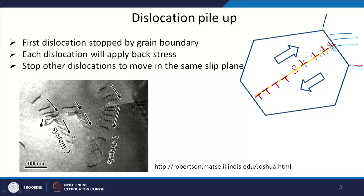What we are noting here is that the first dislocation is stopped by the grain boundary, and each subsequent dislocation applies a back stress that stops other dislocations from moving on the same slip plane. There is a very nice transmission electron micrograph — TEM — where you can see all these dislocations arranged approaching the grain boundary, and the arrow indicates the direction of dislocation movement.